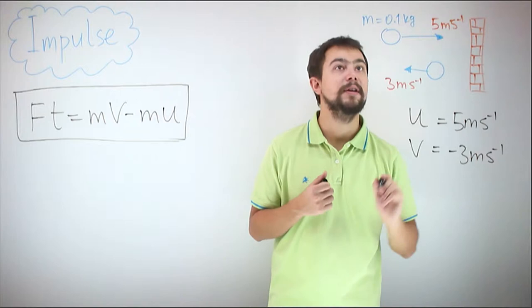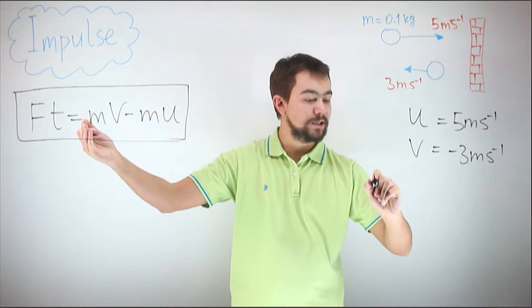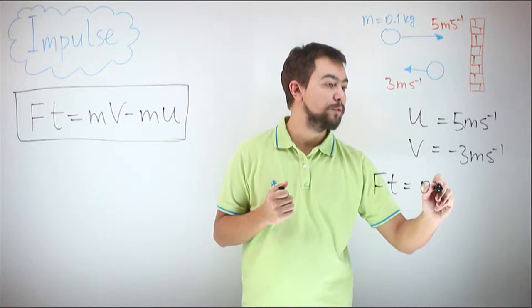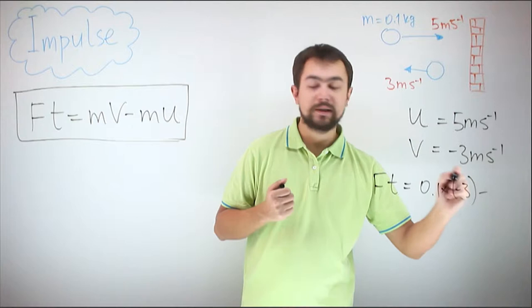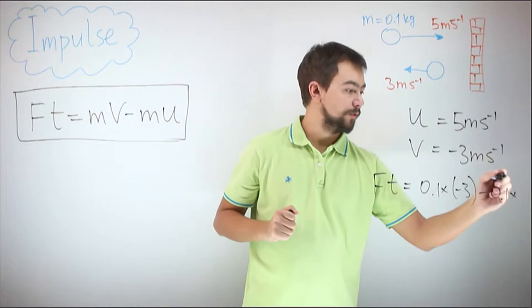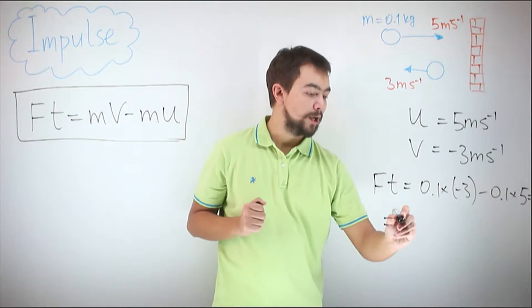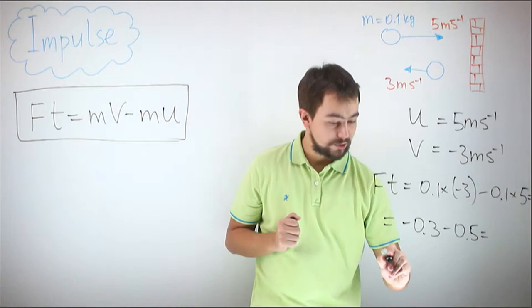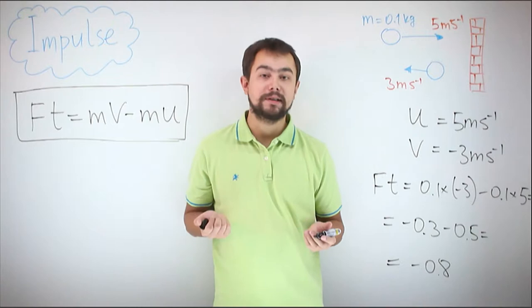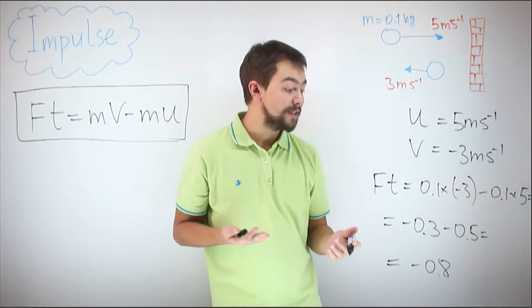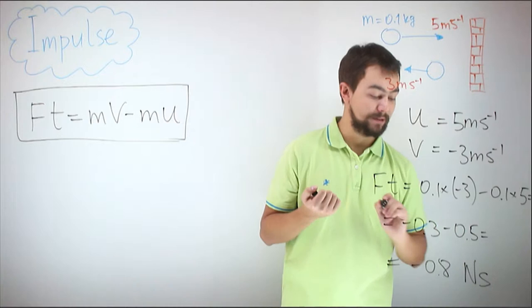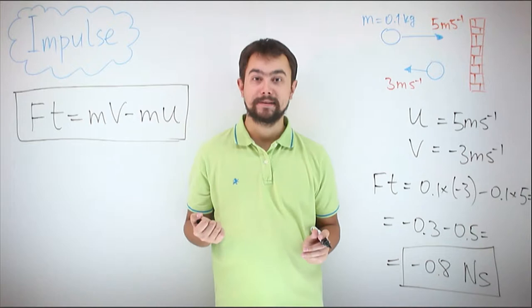The mass is 0.1 kilograms. So impulse Ft is equal to 0.1 multiplied by V, which is minus 3, minus 0.1 multiplied by 5. That's equal to minus 0.3 minus 0.5, which totals minus 0.8. Since impulse is force multiplied by time, it makes sense that impulse is measured in Newton seconds. So the answer is minus 0.8 Newton seconds.